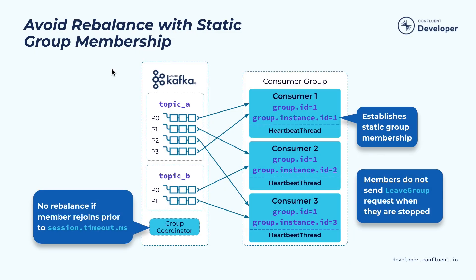The last thing we can consider is to avoid rebalance completely. In some common cases, the reason we need to rebalance is that a consumer instance is restarted — perhaps for upgrading or picking up some new configuration. In this case, you know the consumer instance will come back pretty quickly, so you can choose not to move the partitions around during this phase and just wait for the consumer to come back. To achieve this, we are introducing a new capability called static group membership. In this model, you assign a static member ID for each consumer instance in the group. During the assignment, the group leader will deterministically assign partitions to the same consumer instance with the same group member ID.